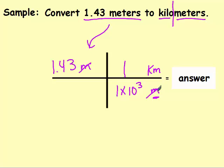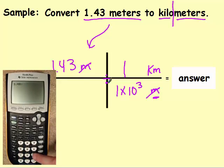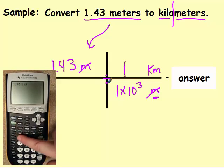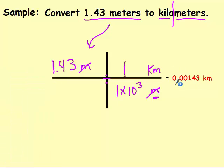I have one on top, one on bottom, in which case I have to divide them. So in the calculator, you're going to type in 1.43 divided by 1 times 10 to the third. Remember to use the EE button. Doing so, you get 0.00143 kilometers.